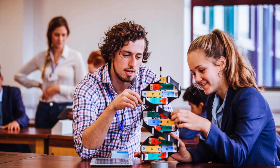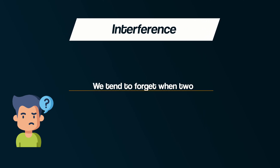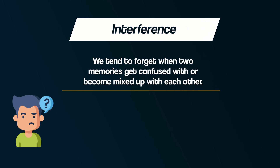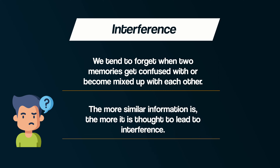Often, when we learn and encode information into our memory, a certain amount of time goes by before we try to recall that information. During that passage of time, we're not simply sat there doing nothing — we're most likely engaged in some other tasks. In the life of a student, you've probably just finished one class and then you're straight off to another class in another subject. What if these tasks interfere with your earlier memories? The main idea behind the interference explanation is that we tend to forget when two memories get confused with or become mixed up with each other. The more similar information is, the more it's thought to lead to interference.